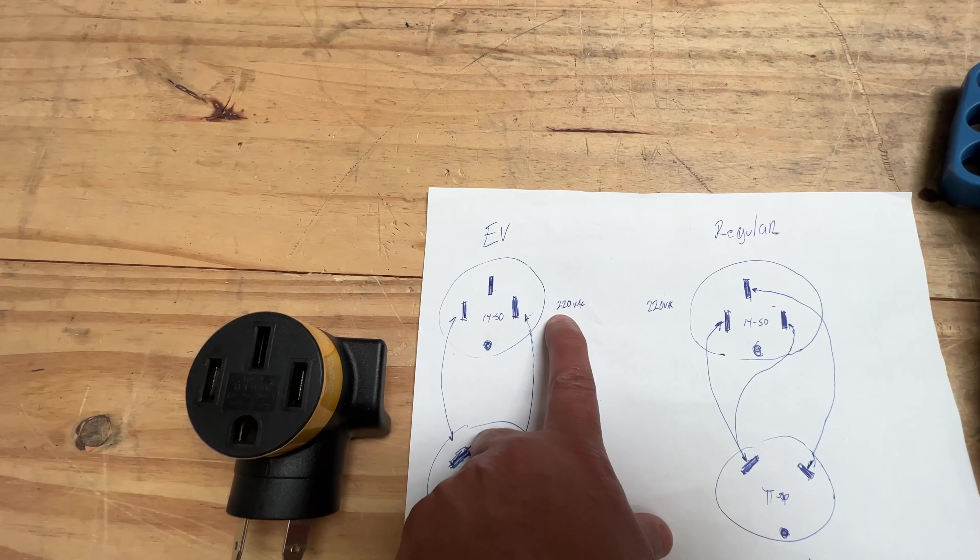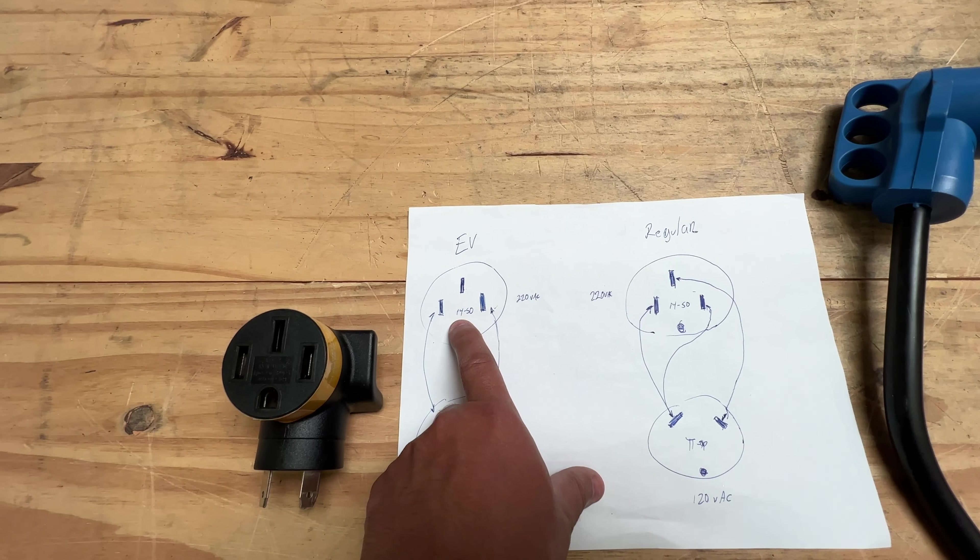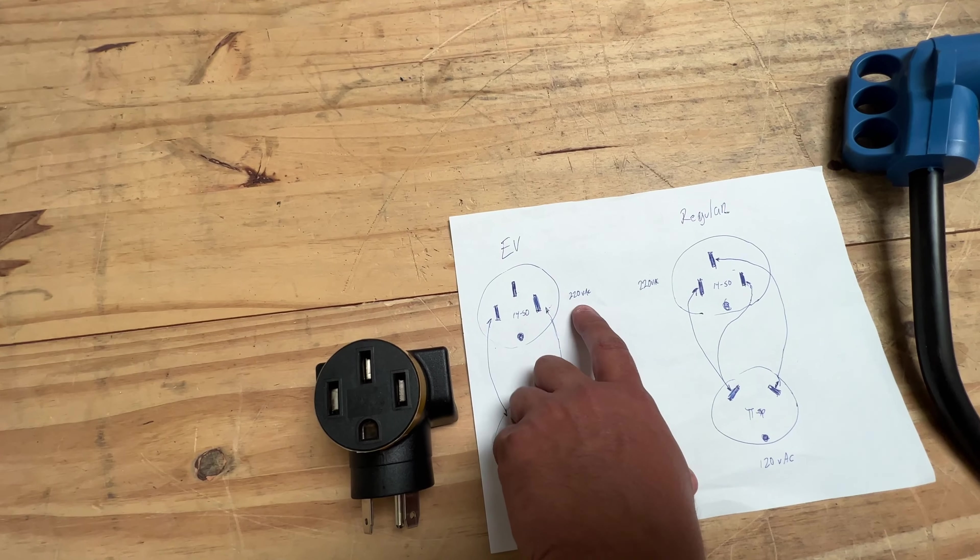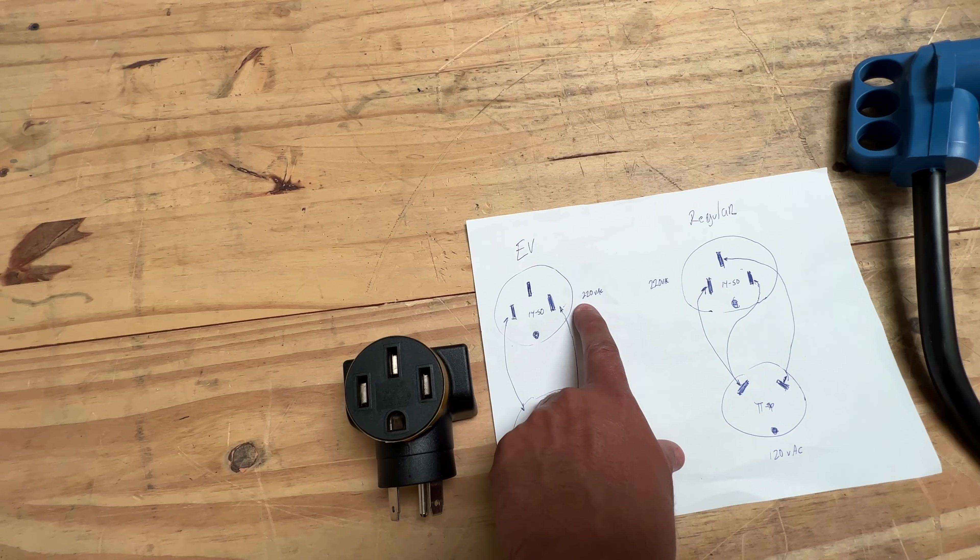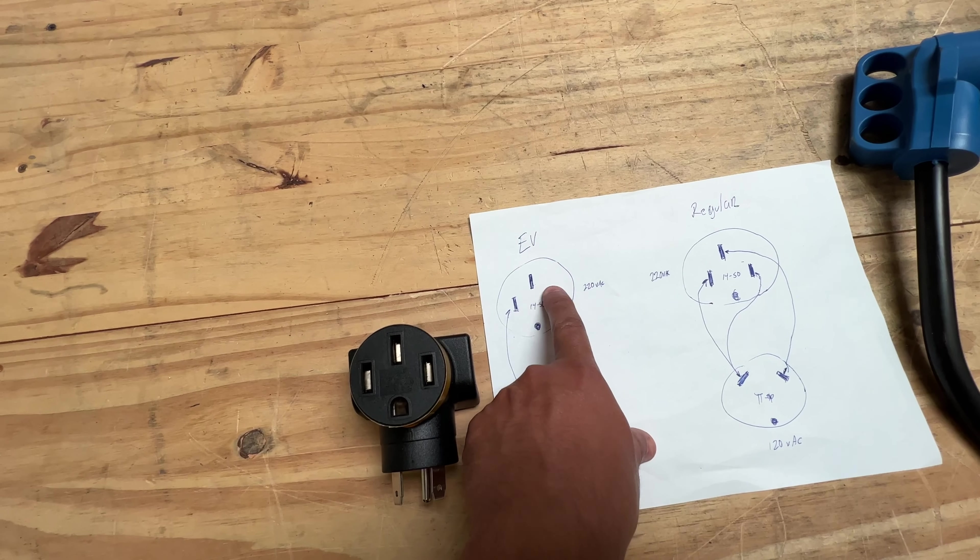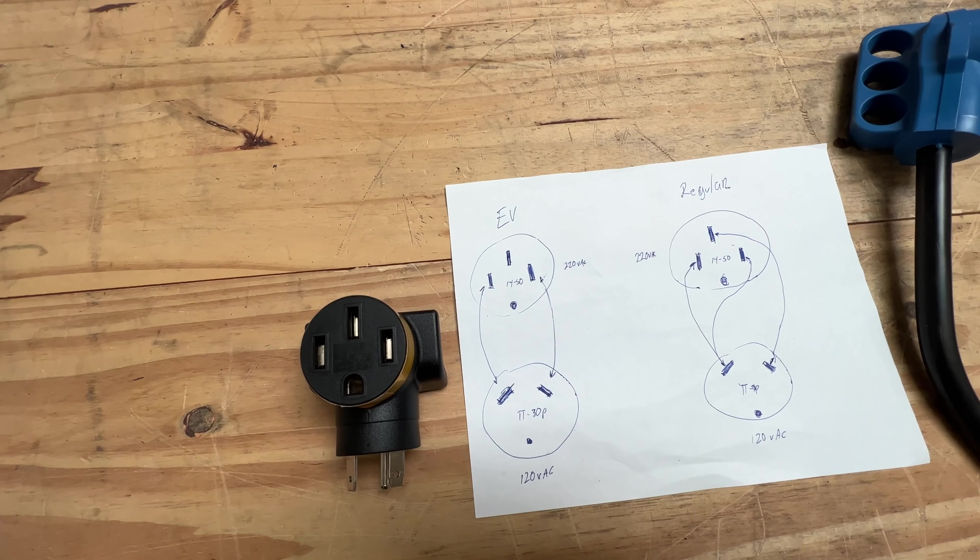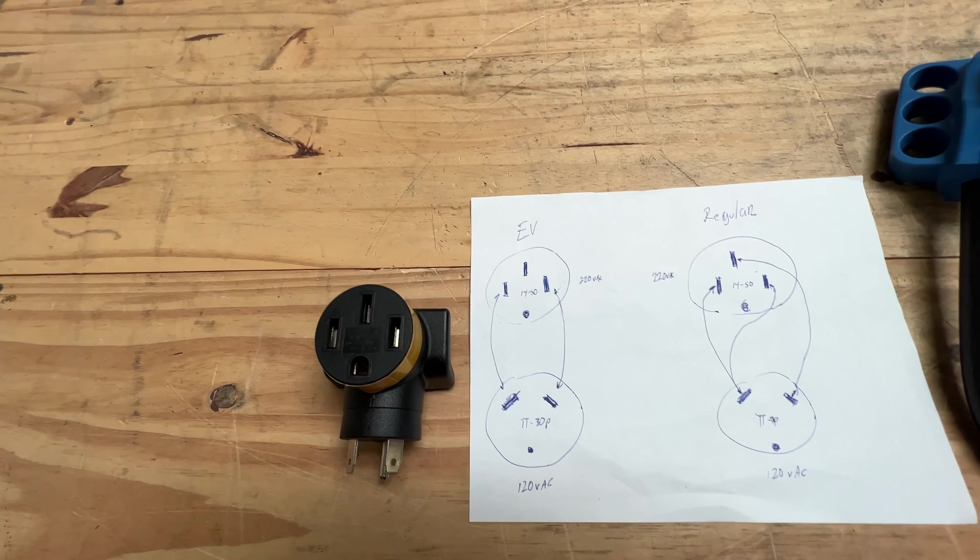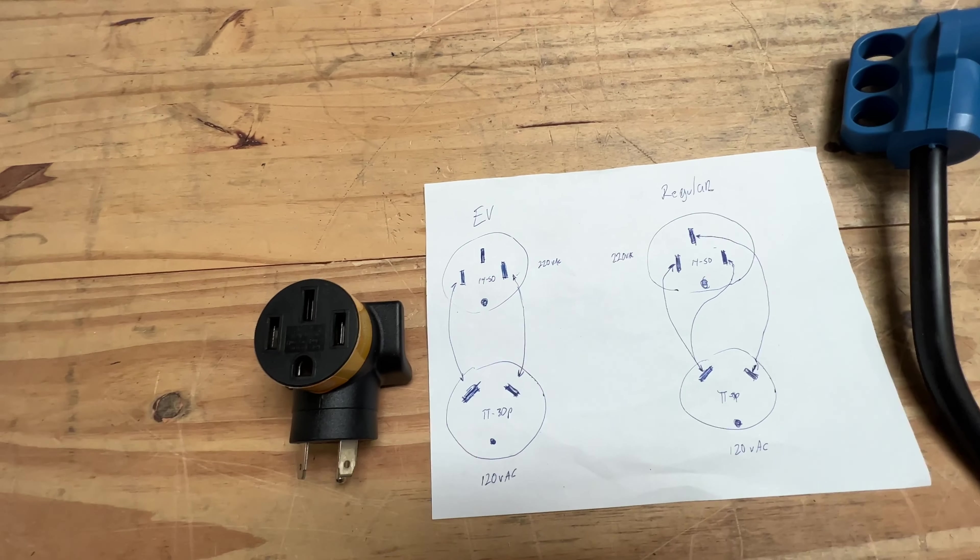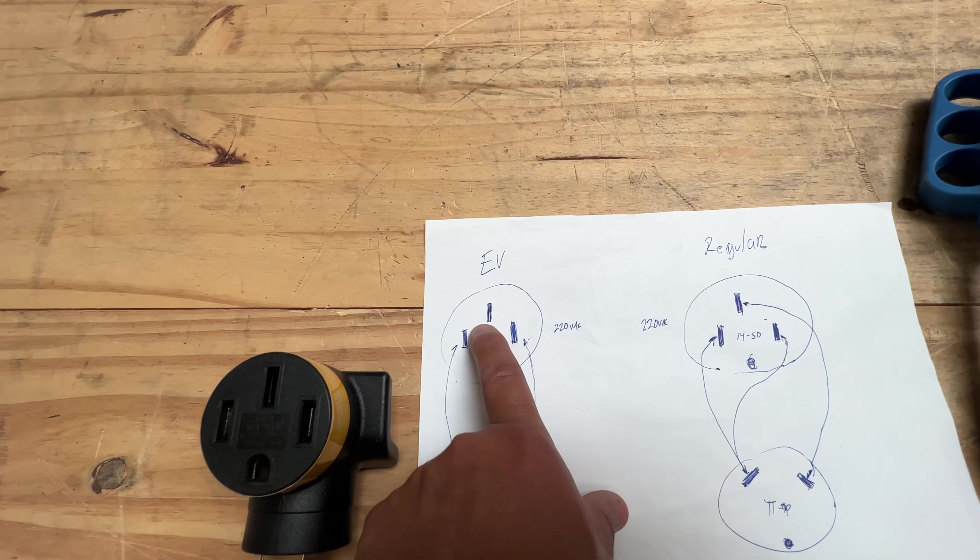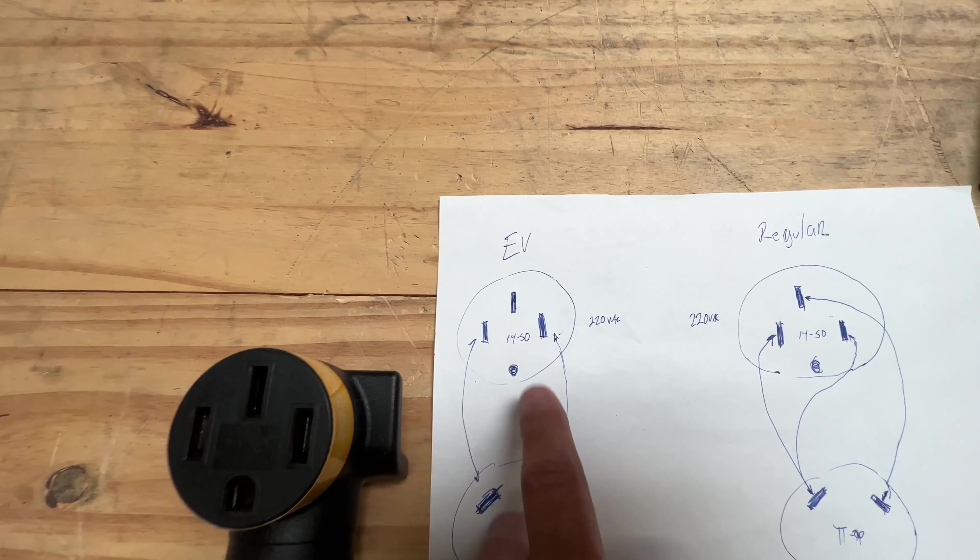The NEMA 14-50 allows you to have full phase voltage, which is 220, but also half phase or center tap, which is 120—what most American appliances use. We're only using half of the phase.